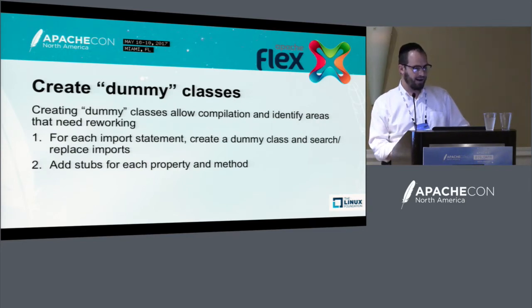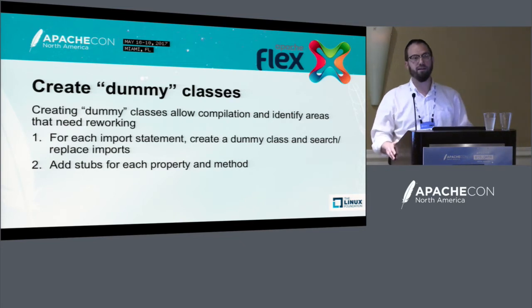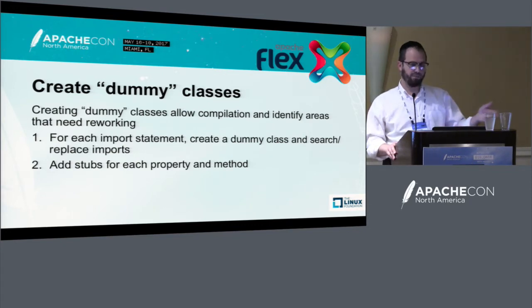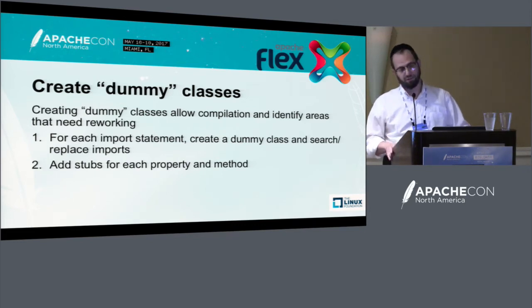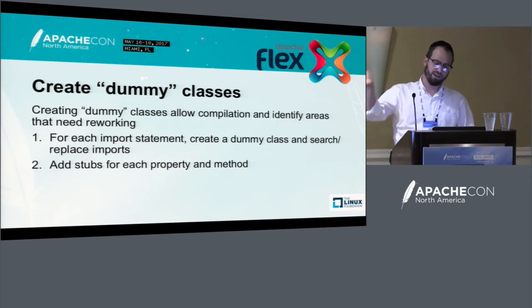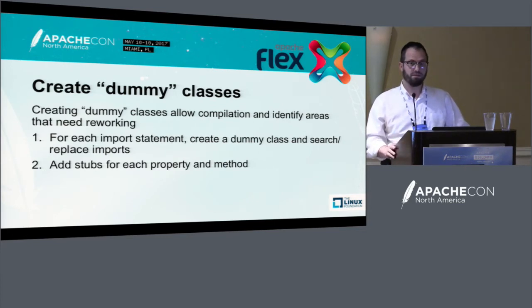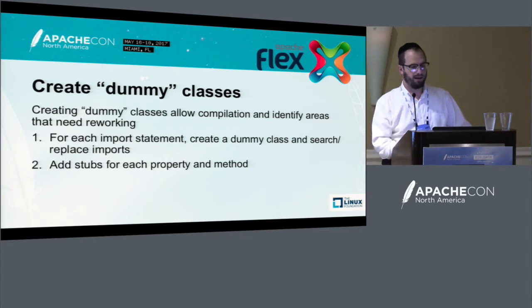Creating dummy classes is a two-step process. Each time you encounter a class — generally flash or flex — take the import statement, create a new class, and search-and-replace all your imports to point to the new one. Some import statements will respond to dummy classes. Others, FlexJS has equivalents: mouse events, events, matrix, point, rectangle — basically you transfer the Flash ones to the FlexJS ones. Things that FlexJS does not have equivalents to, you create dummy classes for those. Initially the dummy classes should be empty with no methods and no properties, and each time you find a property or method used in that class, just add a stub — that'll make the compiler error go away.